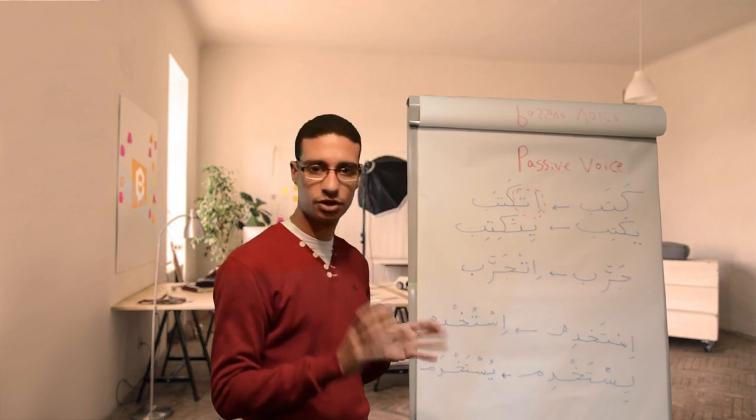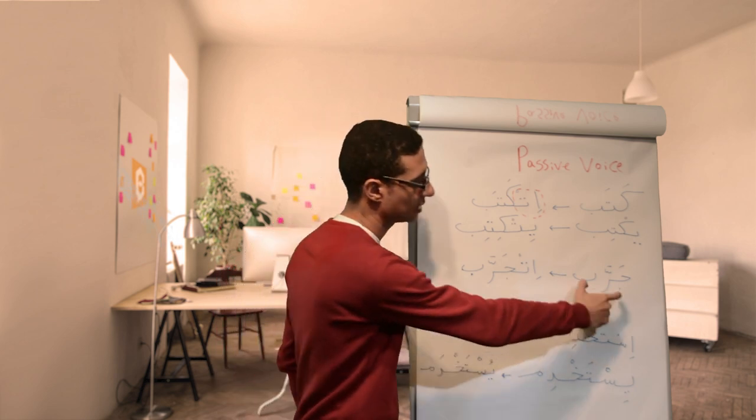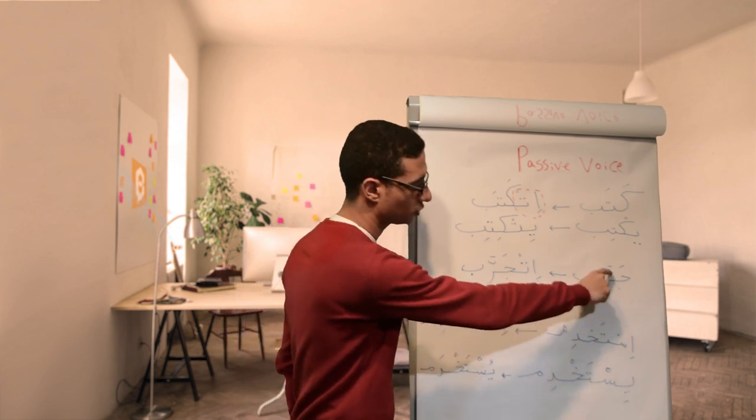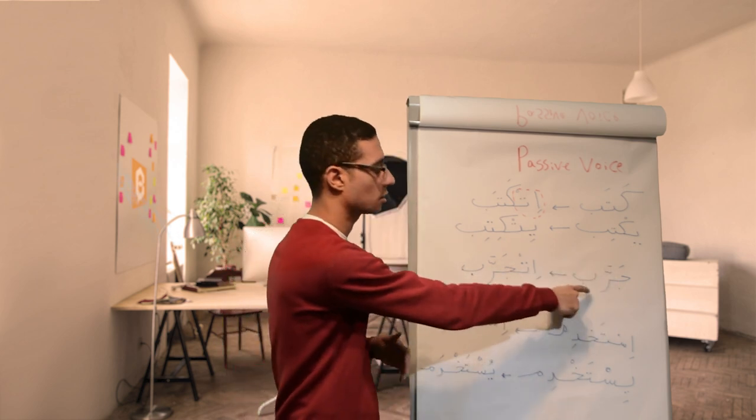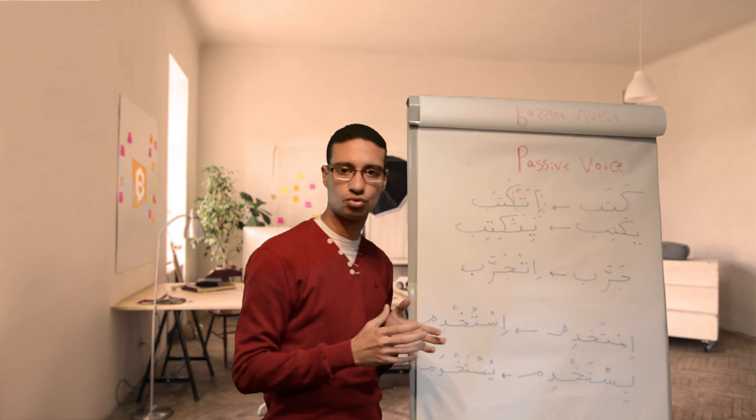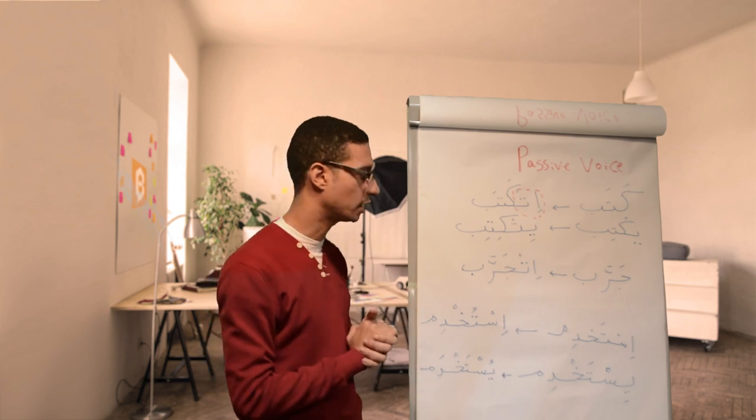Another verb that's not a three-letter verb is garrab. It's a four-letter verb, because we have shadda here, so the r is double, so garrab. To experiment, to try something, to try out.